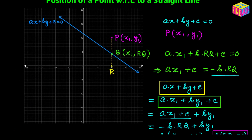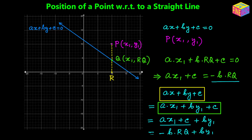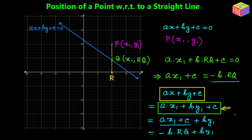As we move P from one side to the other side of the straight line, the value of the expression — ax plus by plus c evaluated at P's coordinates — changes from positive to zero to negative, or from negative to zero to positive. The most important idea is that as P moves from one side of the straight line to the other, the sign of this expression changes.